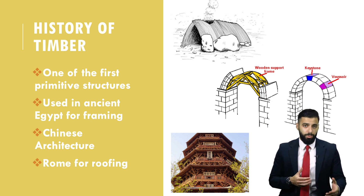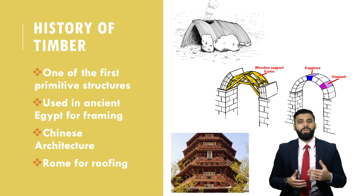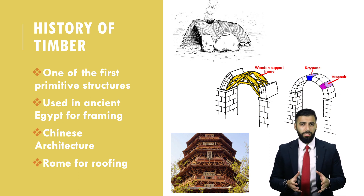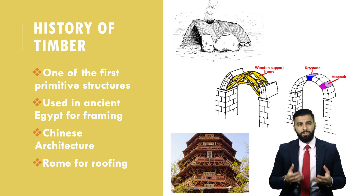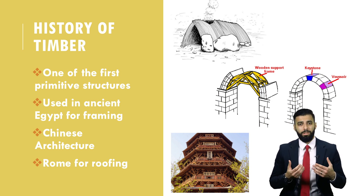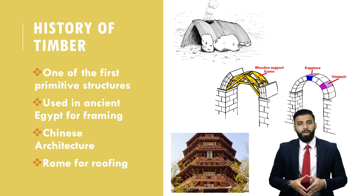In the 20th century, steel and concrete were introduced to the market and were found to be easier and more economical to handle compared to timber, so timber use in construction dropped. Then in the 1960s, engineered wood products were developed — including glued laminated timber, GLT, commonly referred to as glulam, and LVL, which I'll talk about later — and the use of timber picked up again.